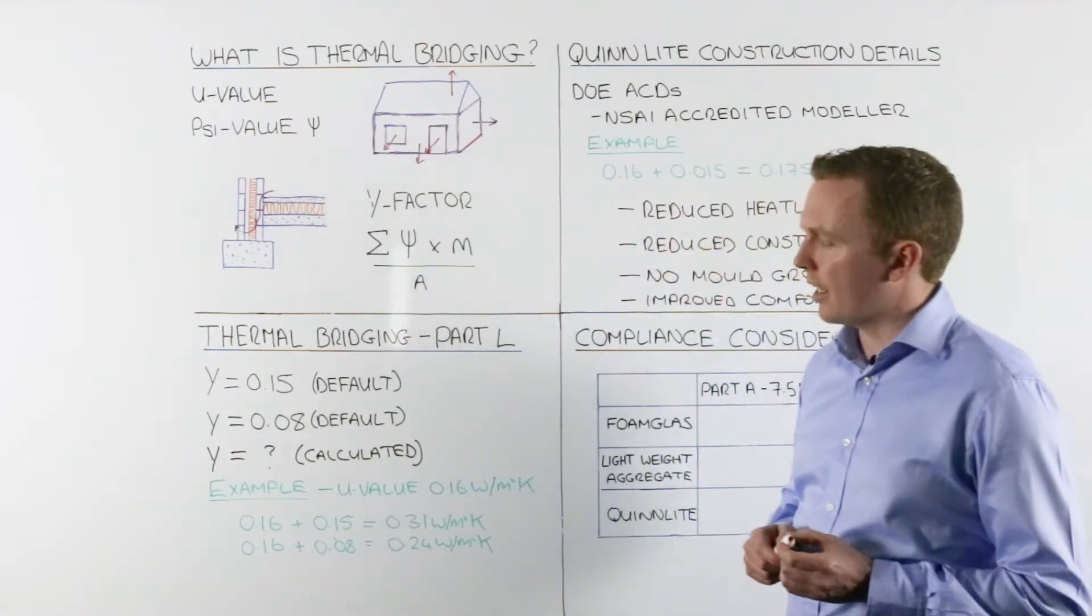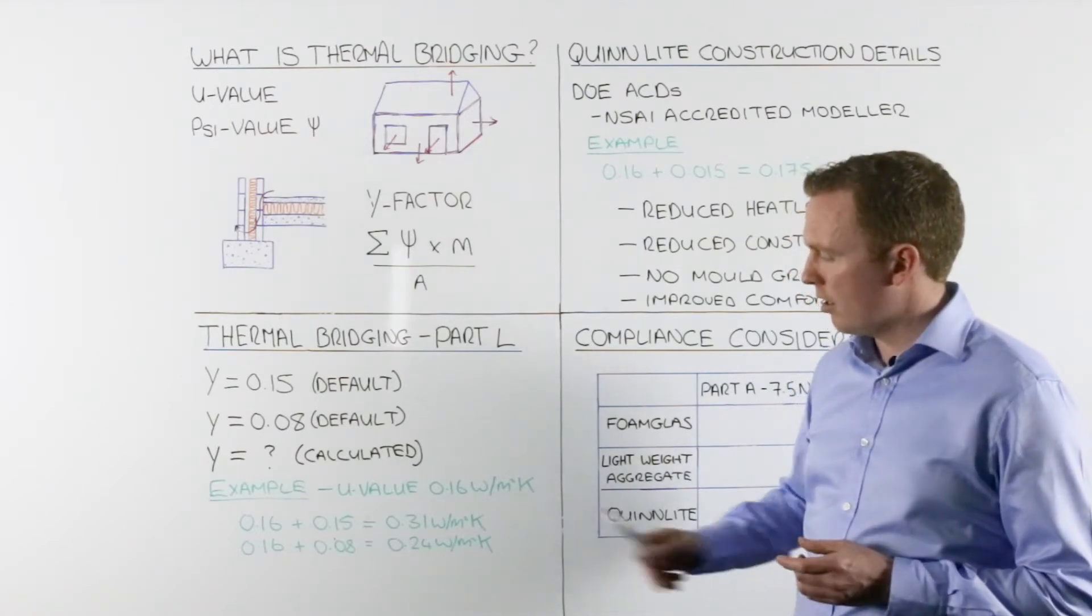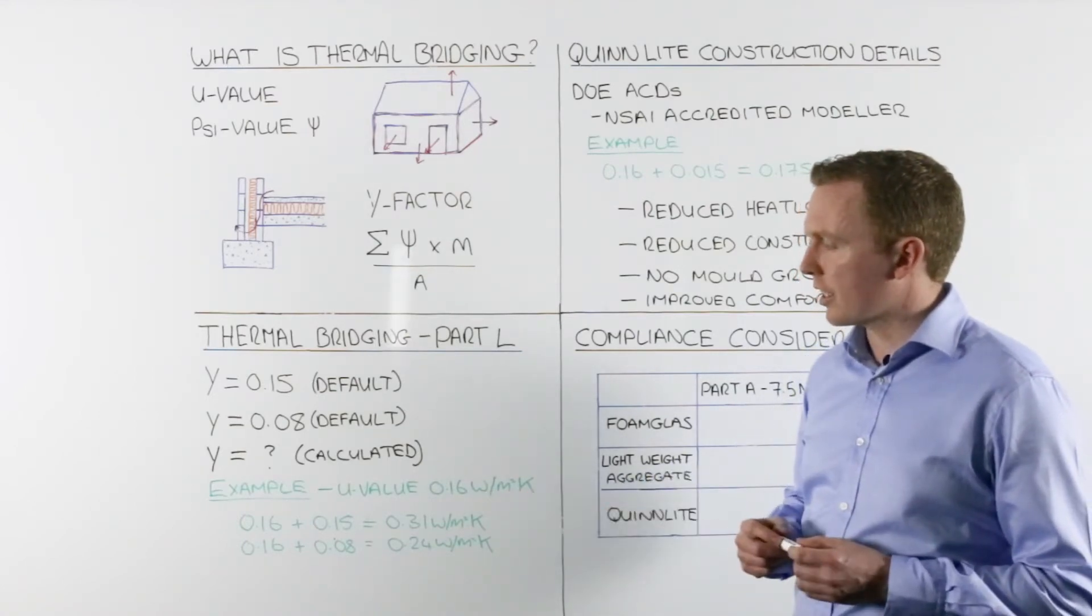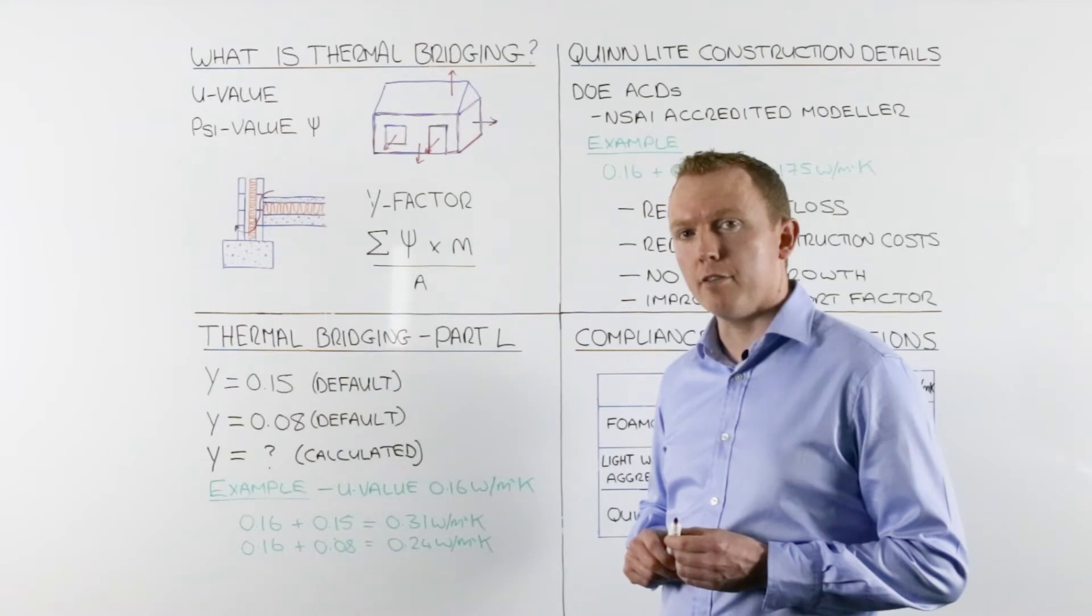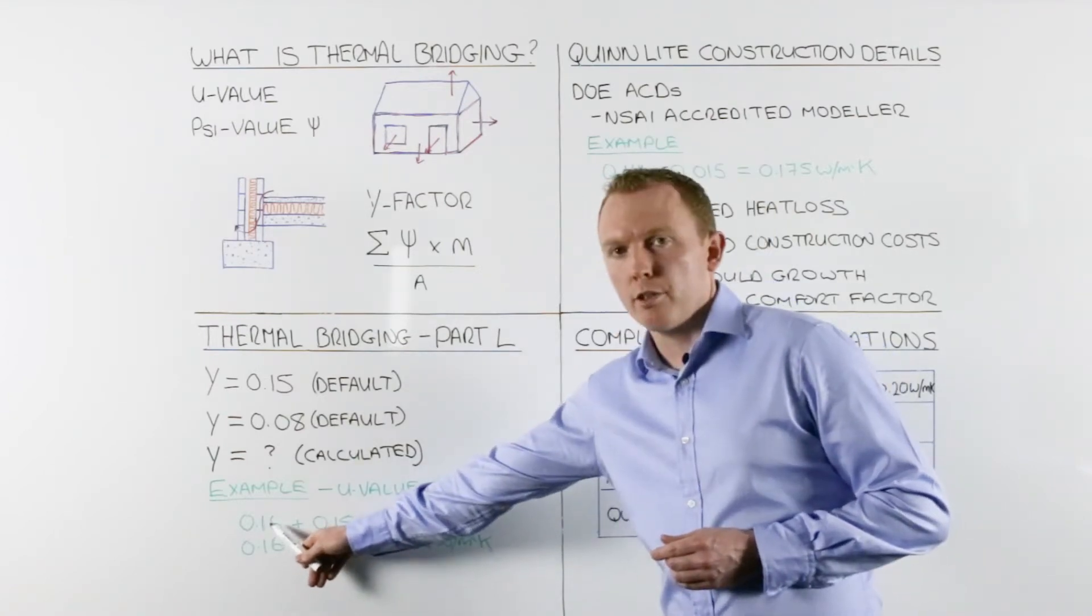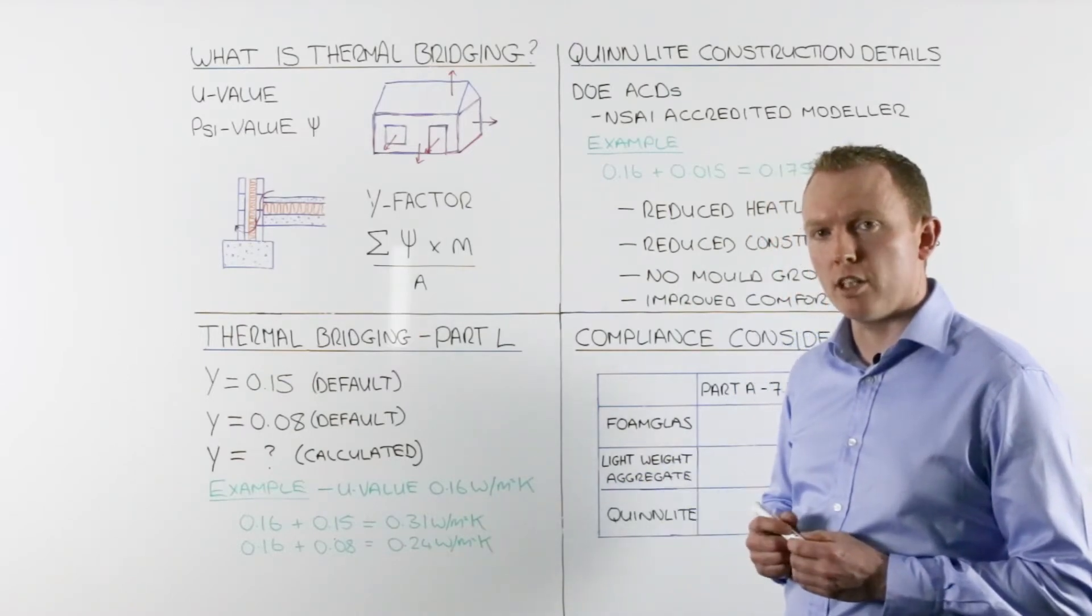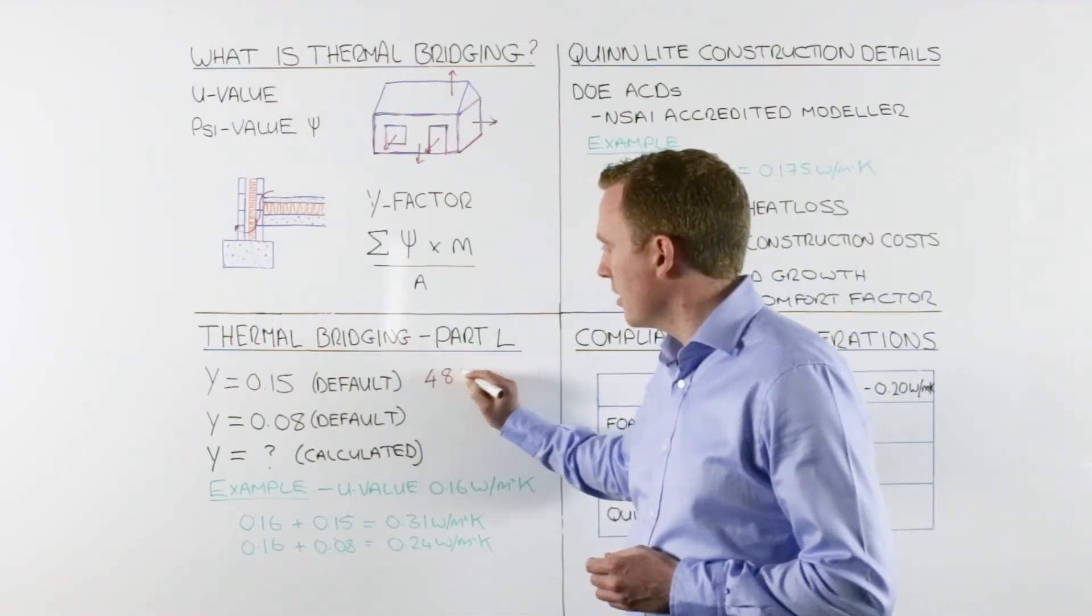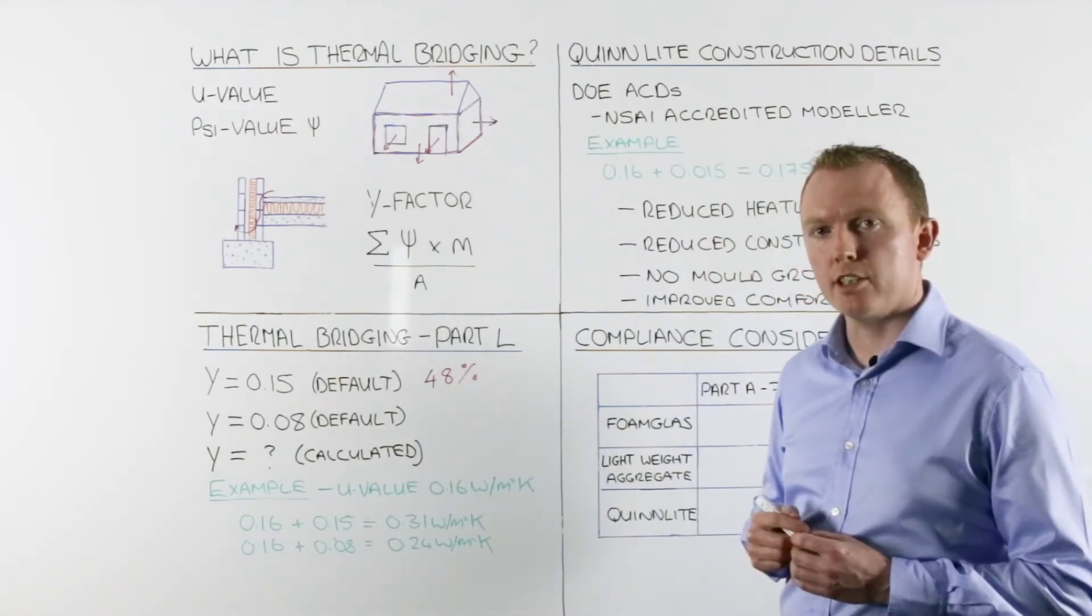So we look at an example then, how these Y-factors affect the heat loss within the DEAP software. In the example, we've taken a house with an average U-value of 0.16. When we apply a default Y-factor of 0.15 to that, essentially what the DEAP software is doing is adding 0.15 to our average U-value of 0.16 to give a heat loss of 0.31 watts per meter squared kelvin. That's a massive 48 percent heat loss to thermal bridging, and that's in no way accurate, so as I say, that should be avoided.